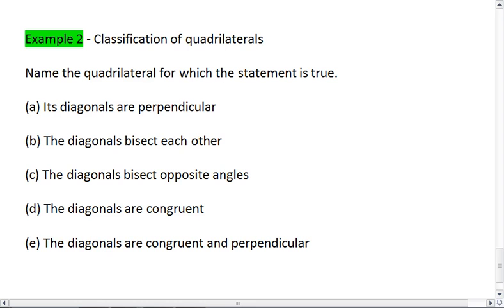Part A, its diagonals are perpendicular. This is a rhombus, which also means it's a square, which is a type of rhombus.